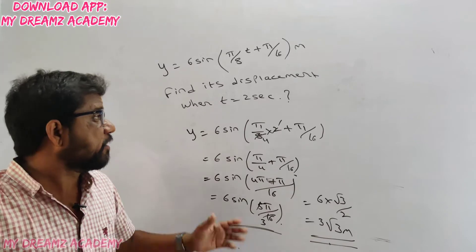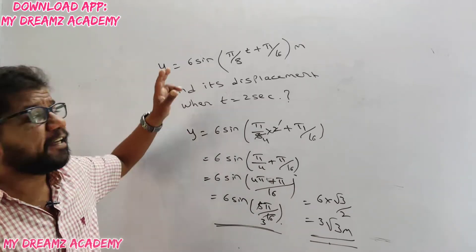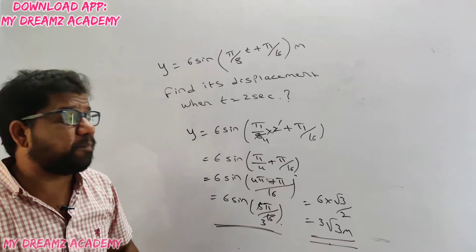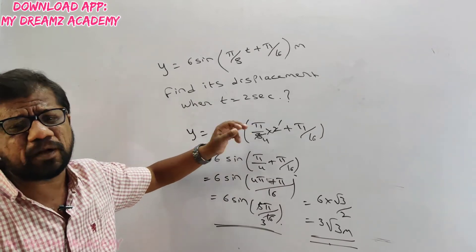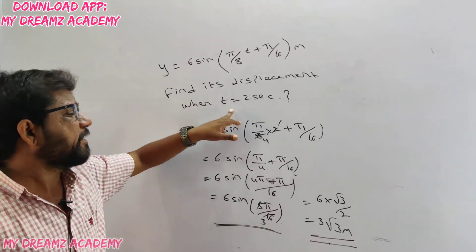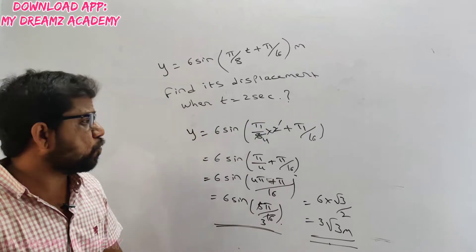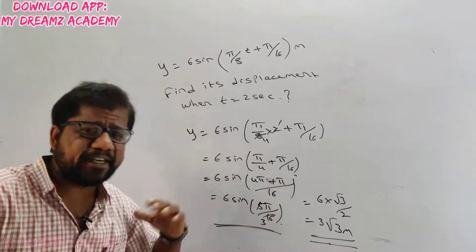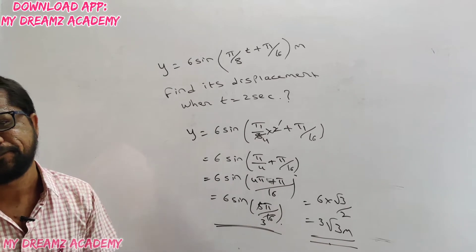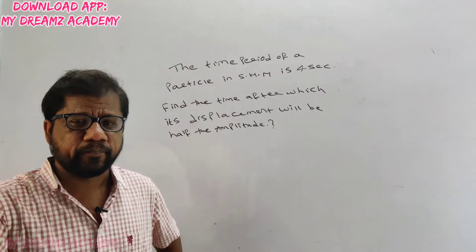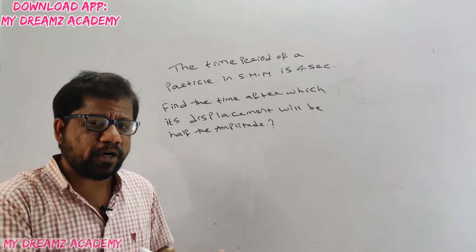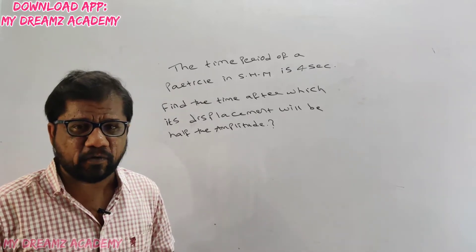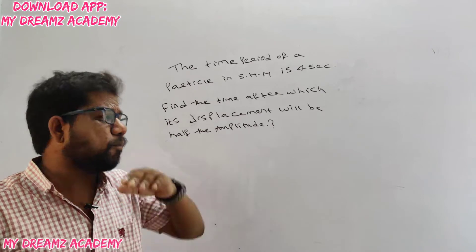To repeat: in the initial displacement question we set t = 0, but in this question we find displacement at t = 2 seconds by simply substituting the value and evaluating the sine. Next is a reverse-order question where parameters are found from given hints rather than directly from the equation.